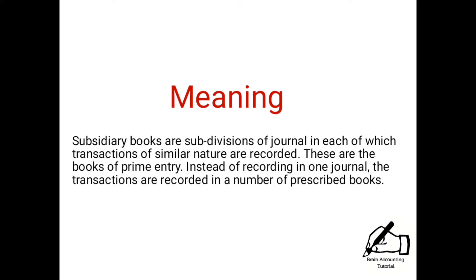The main journal, the purchase book, the sales book, and other books are all part of the subsidiary book system. Subsidiary book number one covers these key books.